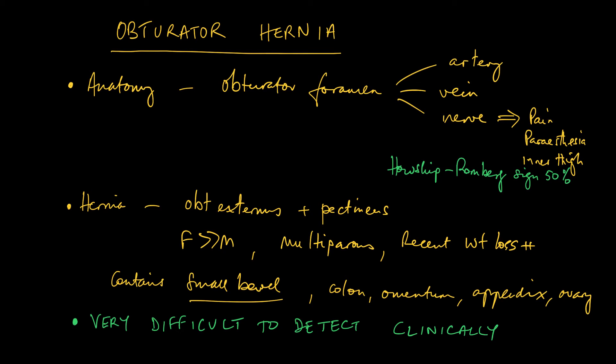The important take-home message for the radiologist is that this is a very difficult diagnosis to be made clinically. The hernia is often impalpable and it's left to CT to pick up the hernia itself. Anyone who presents with abdominal pain and small bowel obstruction, the radiologist needs to look for an obturator hernia, which is a very rare but classical CT diagnosis.